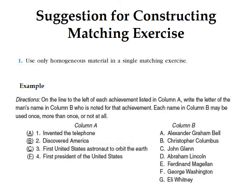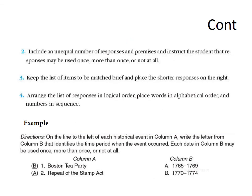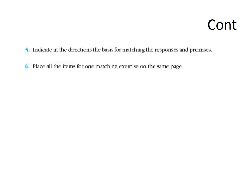Suggestions for constructing matching exercises: First, use only homogeneous material in a single matching exercise. Second, include an unequal number of responses and premises, and instruct students that a response may be used once, more than once, or not at all — instructions must be clear. Third, keep the list of items brief and place shorter responses on the right. Fourth, arrange responses in logical order — words alphabetically, numbers in sequence — to reduce guessing. Fifth, clearly indicate in the directions the basis for matching. Sixth, place all items for one matching exercise on the same page.